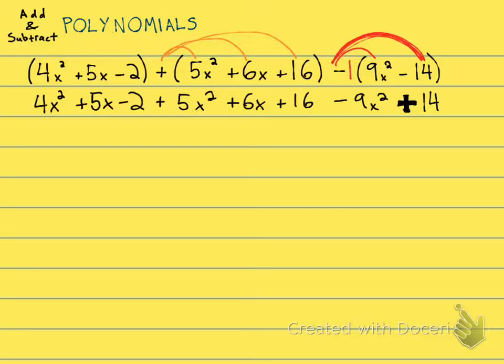Now, all we have to do is put together our like terms. And if you want to, you can rearrange them. You can put all your x² first, and then all your x's, and then all your constants. I'm going to underline them and use a color.